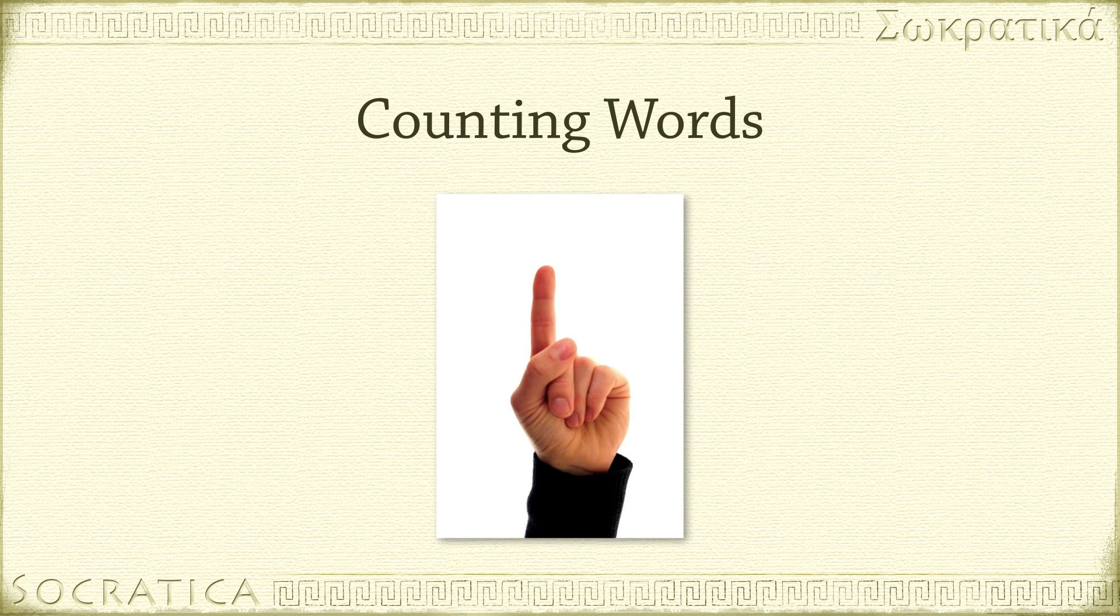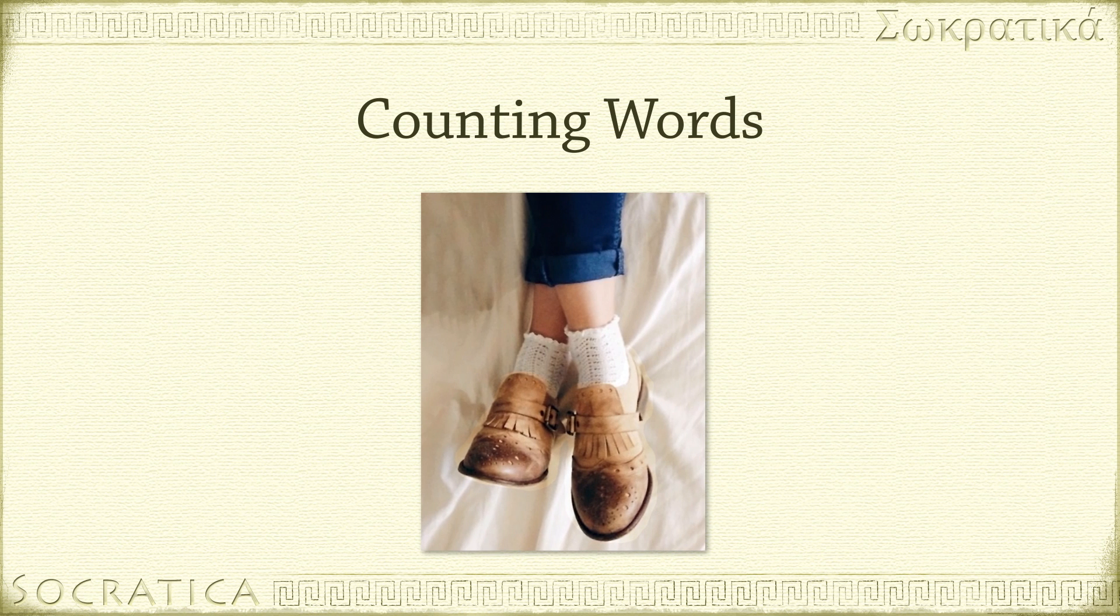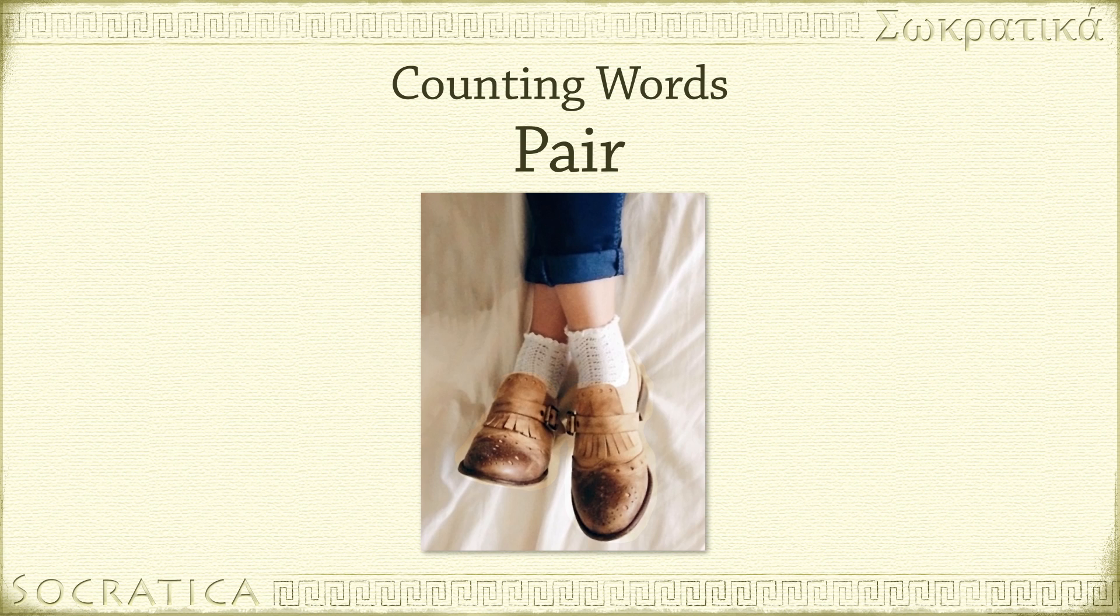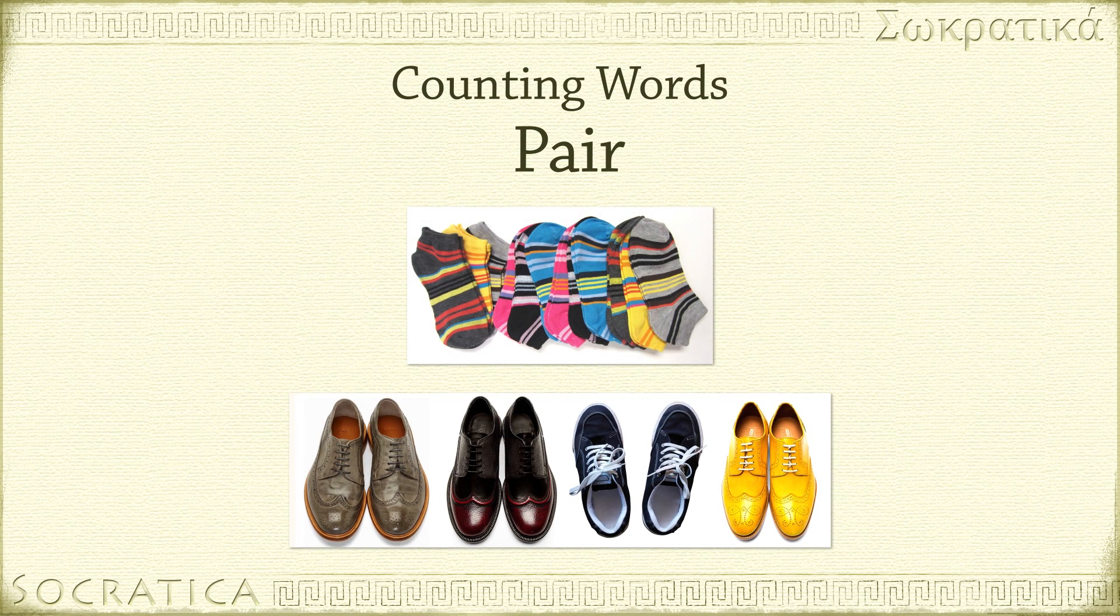When we count ordinary objects, we have certain words we use to make counting easier. For instance, when we talk about our shoes and socks, we always talk about them in terms of pairs. I have four pairs of shoes and twelve pairs of socks. A pair always means two.